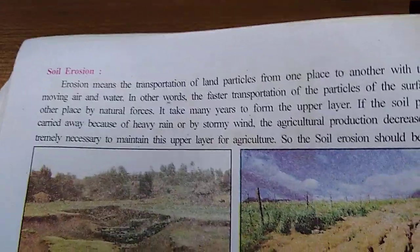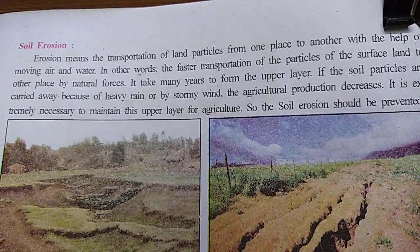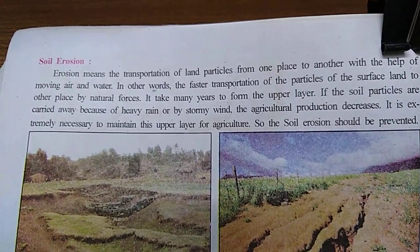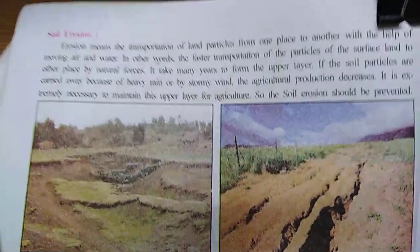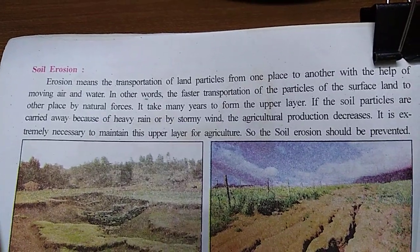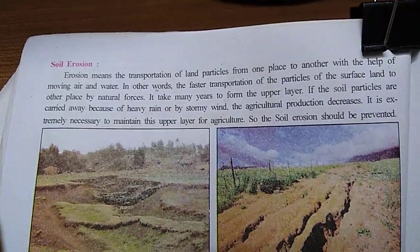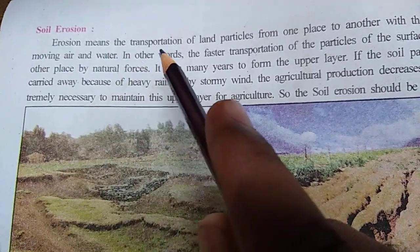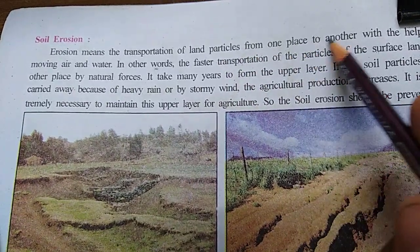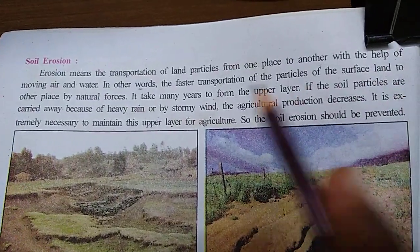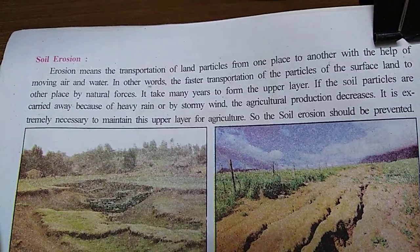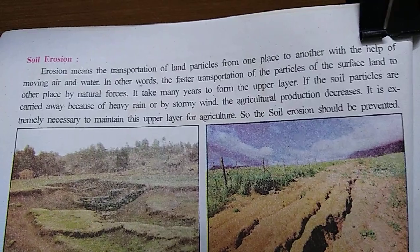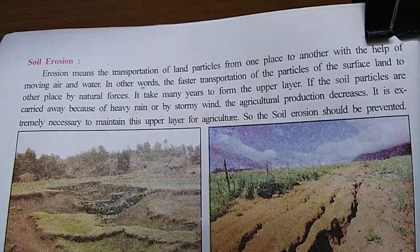Hello students. In the last lecture we talked about the various types of soils, and today we will talk about the last topic of Chapter 8, that is soil erosion. Erosion means the transportation of land particles from one place to another with the help of moving air or water — either with the help of air or by the help of flowing water, the fertile particles move from one place to another.